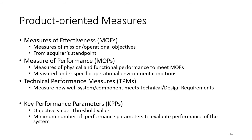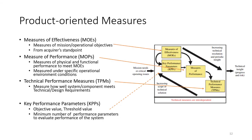The System Engineering Handbook also identifies key performance parameters (KPPs), which are related to the measures of effectiveness and are parameters particularly important to the product definition or the project. A diagram in the handbook illustrates the flow: MOEs lead to KPPs, which flow down into measures of performance covering physical and functional measures, which in turn flow down into technical performance measures of the actual design and technical implementation of the requirements.